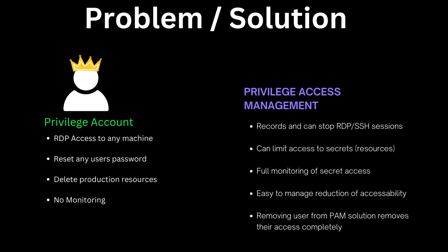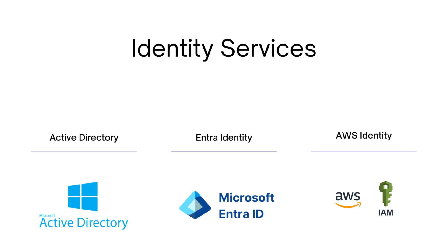When we look at the original privilege account problems we see that there's RDP access to any machine for a lot of users, they can reset the password of every user, delete production resources, and there's limited to no monitoring on most of these accounts. They're typically and traditionally managed through something like Active Directory, and recently we've tried to federate all of our services so that any third-party application you're logging into uses the identity of the organization - for example firstname.lastname@organization.com - so they can access those applications through one place.